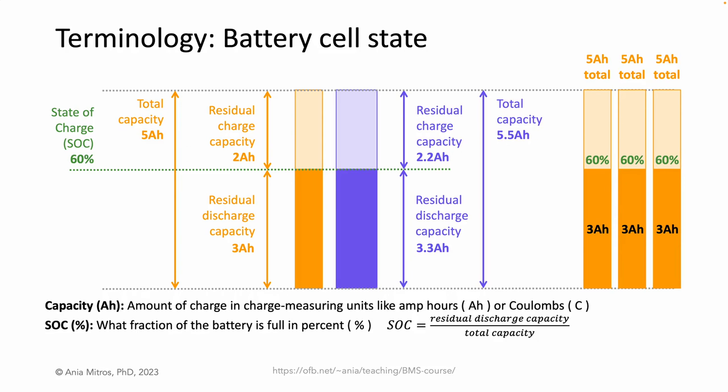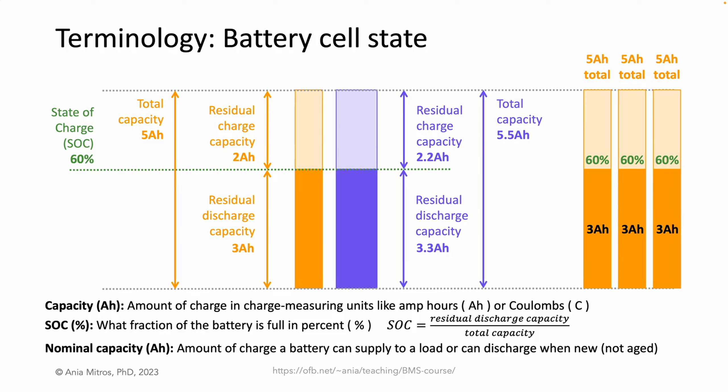To summarize: capacity refers to the amount of charge in charge-measuring units like amp hours or coulombs. Amp hours are more common in industry, but you'll see coulombs in scientific publications. SOC, or state of charge, refers to how charged the battery is as a fraction in percent. And one last term — nominal capacity — is the amount of charge a battery can supply to a load when the cell is new, not aged.